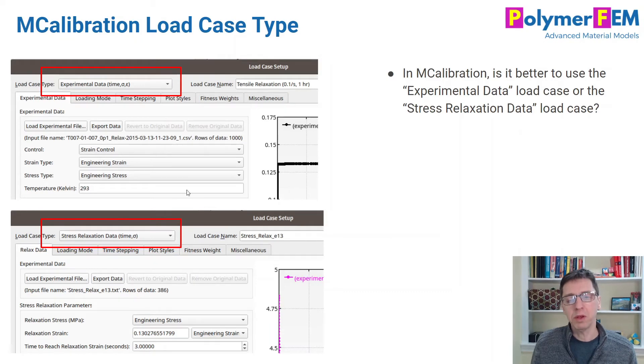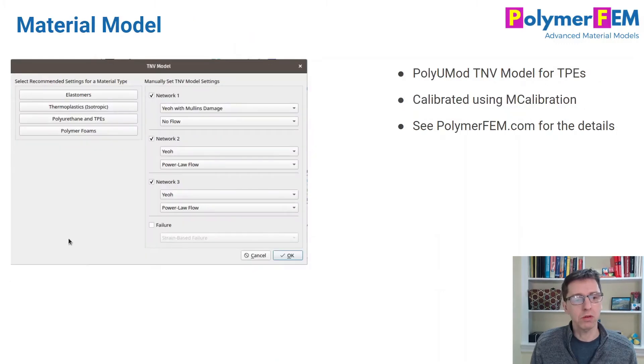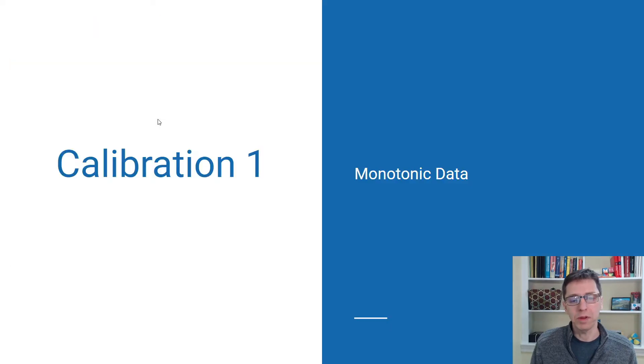The goal here was to explore these four different kinds of calibration approaches in calibrating the TNV model from the PolyUMod library. The difference between experimental data and cyclic data is that you have the complete time, stress, and strain. Whereas if you have stress relaxation data only, you have time and stress just for the relaxation portion of the test. Those are the two things we want to look at, and we calibrated this type of TNV model.